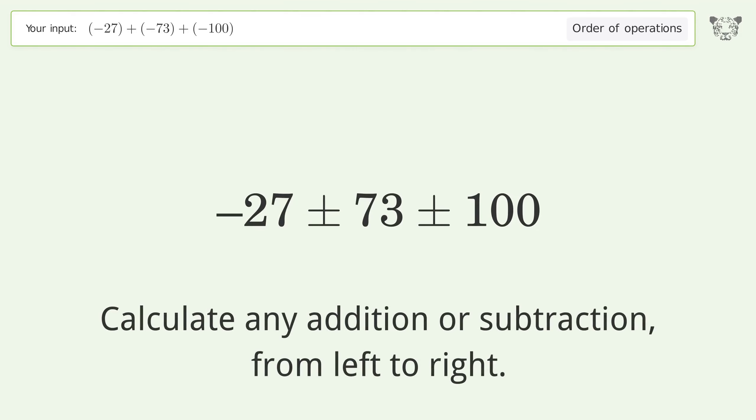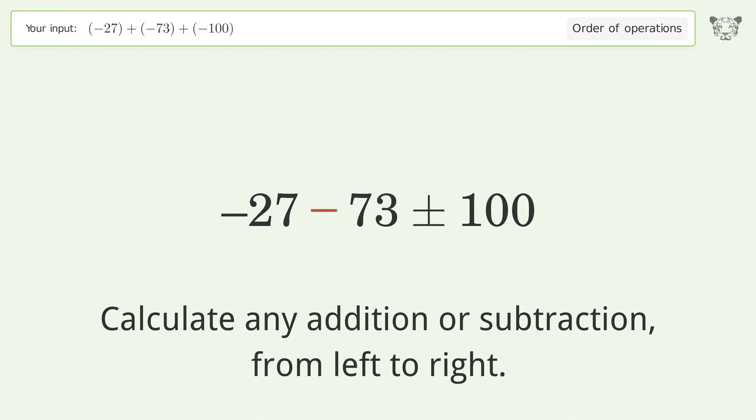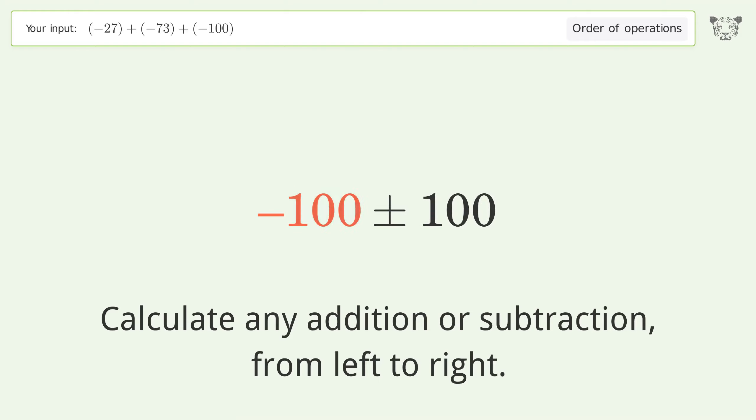We handle any addition or subtraction from left to right. Minus plus minus: negative 27 plus negative 73 equals negative 100.